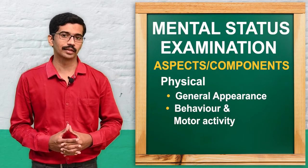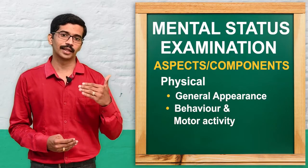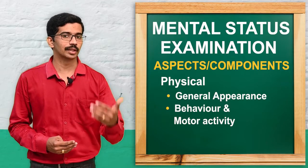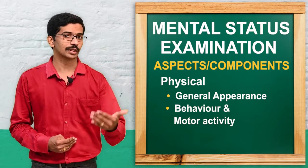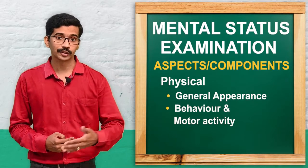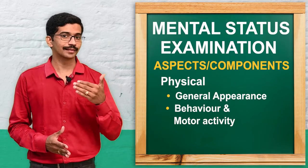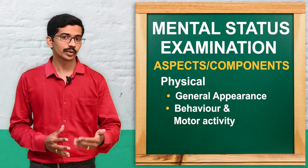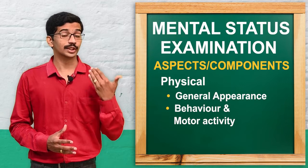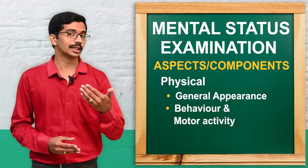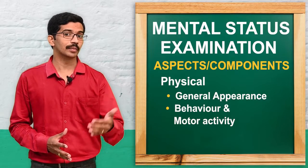In the physical component, we observe and assess the general appearance and motor behavior of the psychiatric patient, starting from the first time the healthcare professional meets the patient. General appearance includes grooming, dressing, personal hygiene, attitude, and how the patient enters the room — whether willingly or forcefully brought in. We also observe posture and gait, psychomotor activity — whether increased or showing psychomotor retardation — stereotypic movements and mannerism, and sensorium, meaning whether the patient is conscious or unconscious.